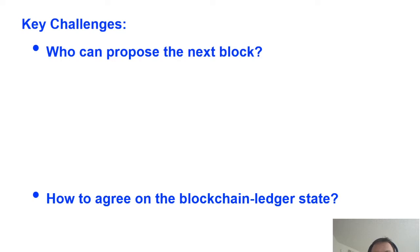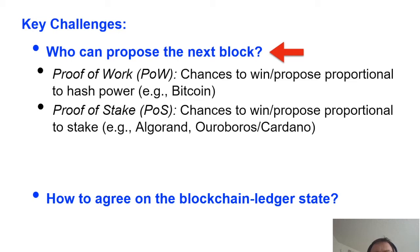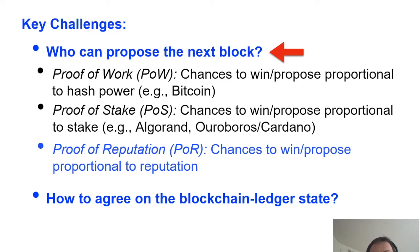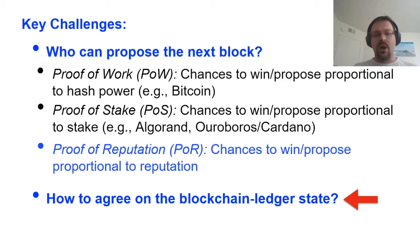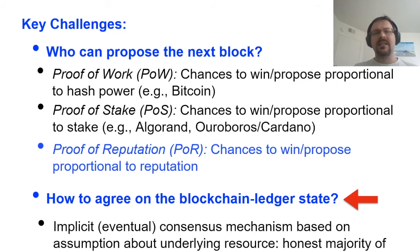The first question mainly differentiates the different technologies used for implementing blockchain ledgers. The two most widely known are proof of work, in which the block proposer is chosen according to hash power invested, and proof of stake, where higher stake gives higher chances of being chosen. The one we consider here is proof of reputation, in which chances of proposing the next block are proportional to one's reputation. For agreeing on the ledger state, we run an implicit consensus mechanism based on the underlying assumption — majority of honest work, honest stake, or in our case, accuracy of the reputation estimate.